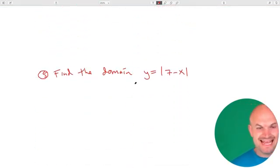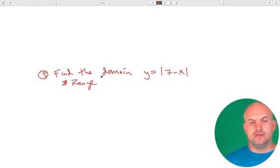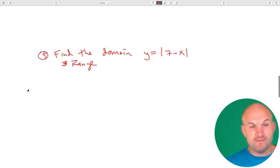The next one is find the domain and range of the following function y equals absolute value of 7 minus x. So there's a couple things that we need to understand here. First of all, the parent function.